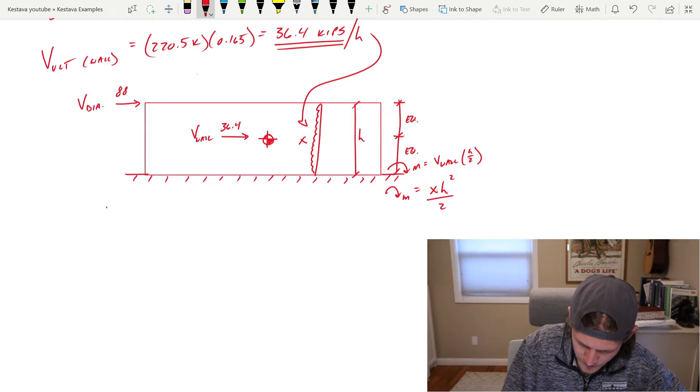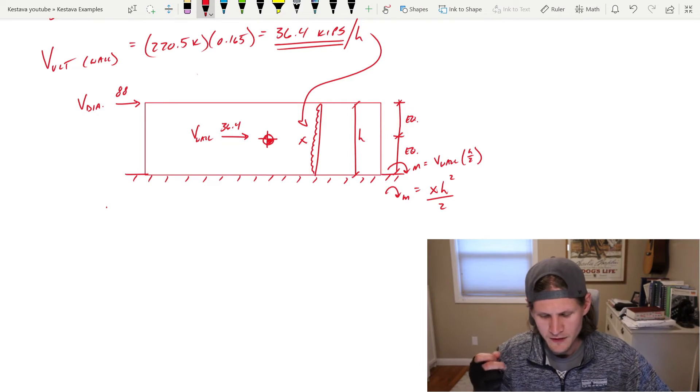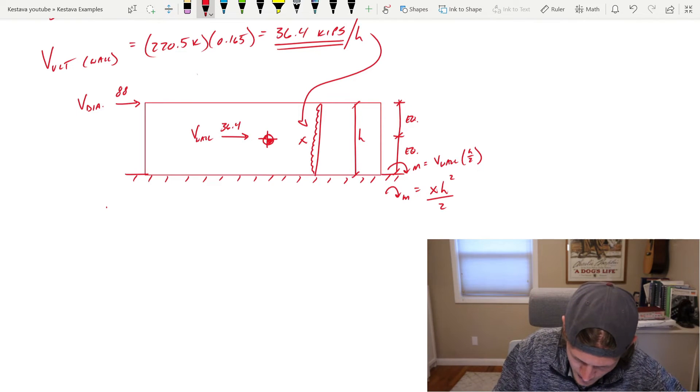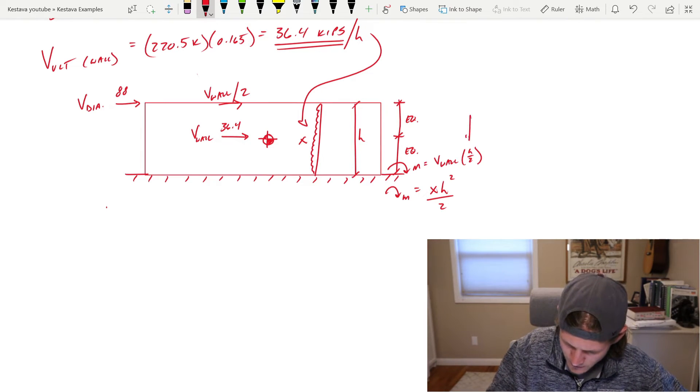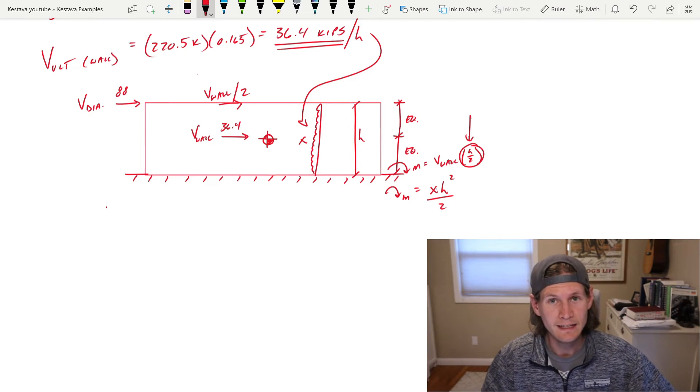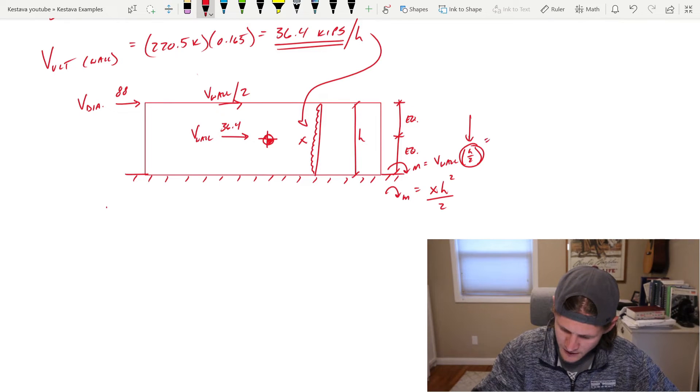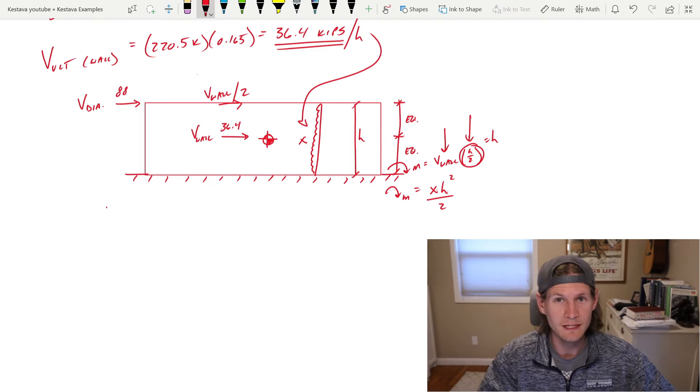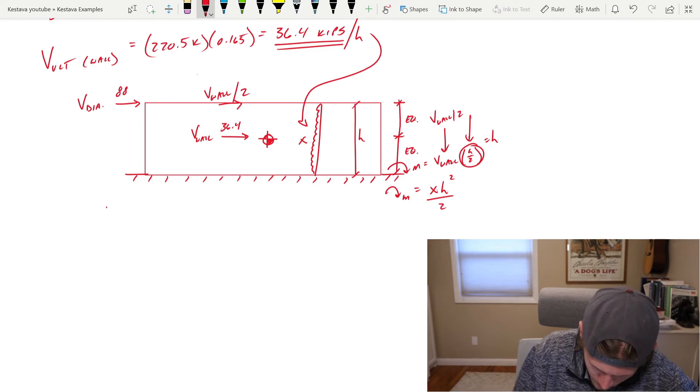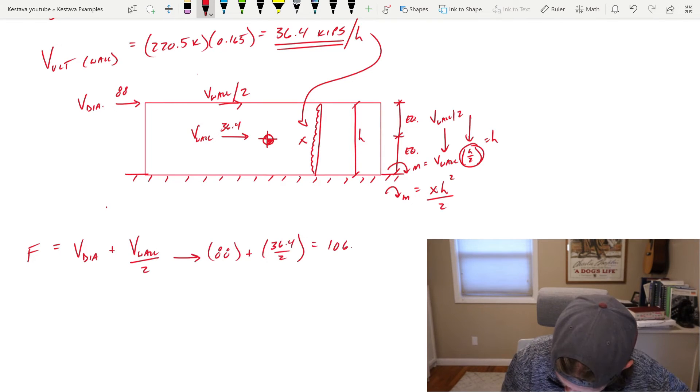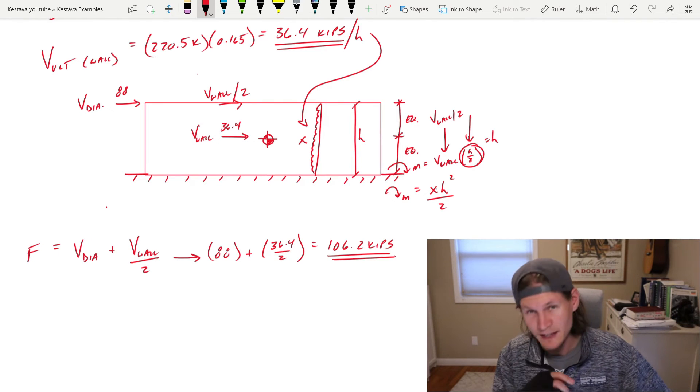And so that means we can actually do this little trick where we can move the demand from v wall up to the top of the wall. And by going up top here, all we need to do is actually take v wall demand and divide it by two, because now you're taking your length component h over two, and you are doubling it, because now you're going to full h. So h over two becomes h. And that means your v wall needs to be divided by two because you doubled your height. So v wall now becomes v wall over two, we will now call for the equations moving forward f. So f is going to be equal to v dia plus v wall over two, 106.2 kips. Keep that in the back pocket, we're going to need that moving forward.